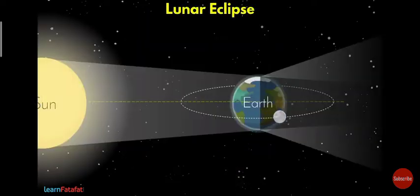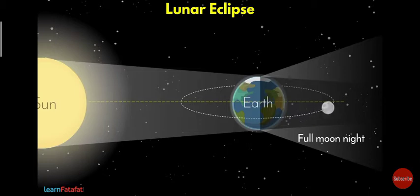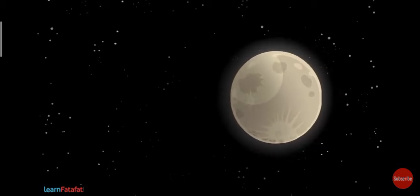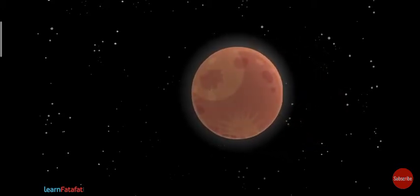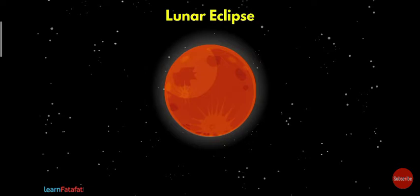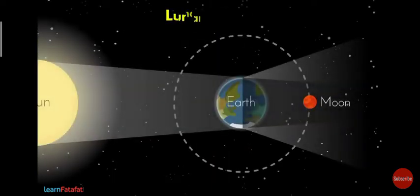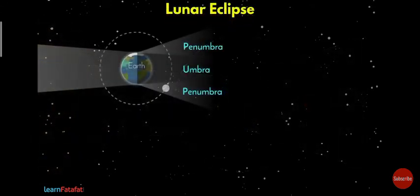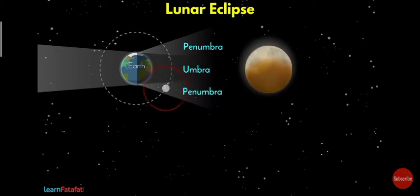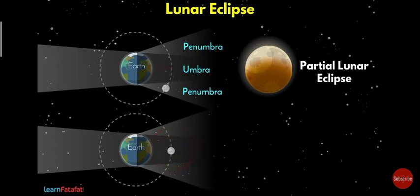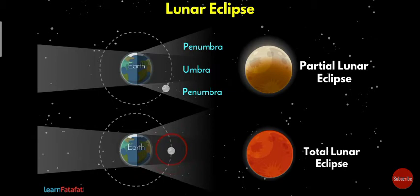Now let's learn about the lunar eclipse. When the Earth is between the moon and the Sun, the lunar eclipse occurs. The shadow of the Earth falls on the moon, and the moon looks reddish. This is a partial lunar eclipse, and when the shadow fully covers the moon it is called a total lunar eclipse.